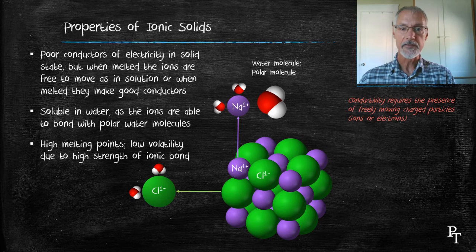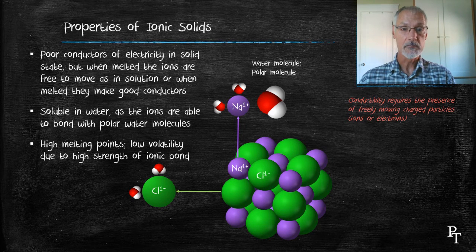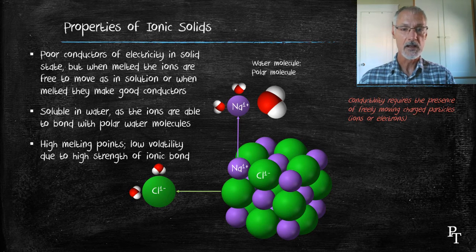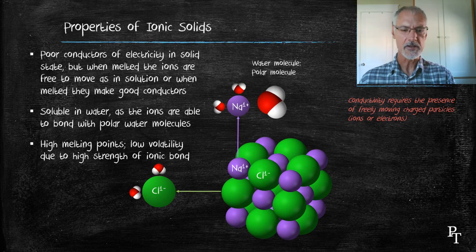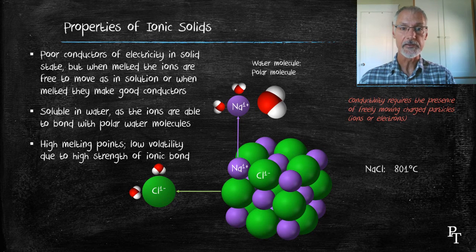Lastly, ionic bonds tend to have very high melting points and are not very volatile. Volatile means easily evaporated. So for instance, sodium and chlorine require 801 degrees Celsius to melt or break that ionic attraction.